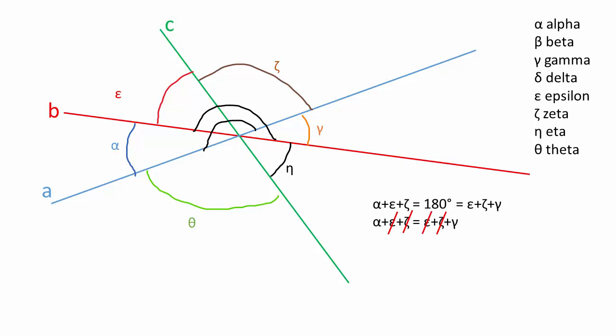So if we remove epsilon and zeta from both sides, we get that alpha is equal to gamma, exactly the same as last time.